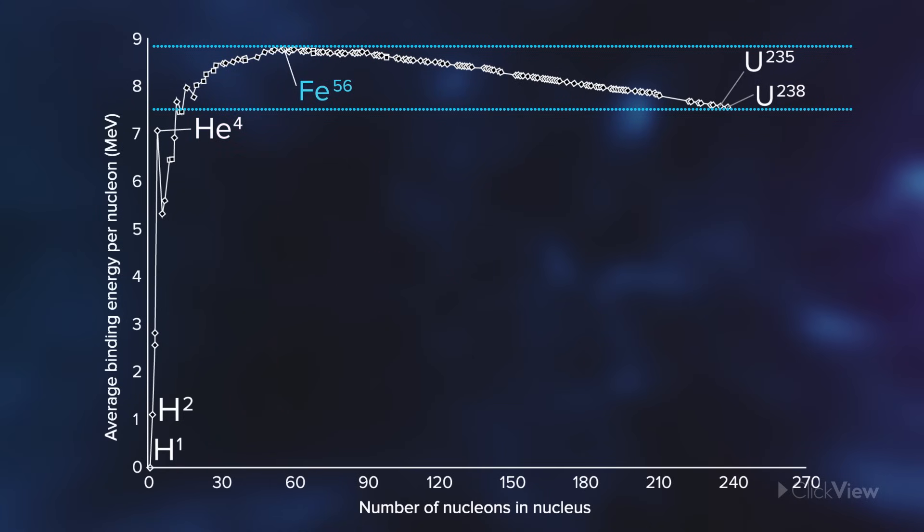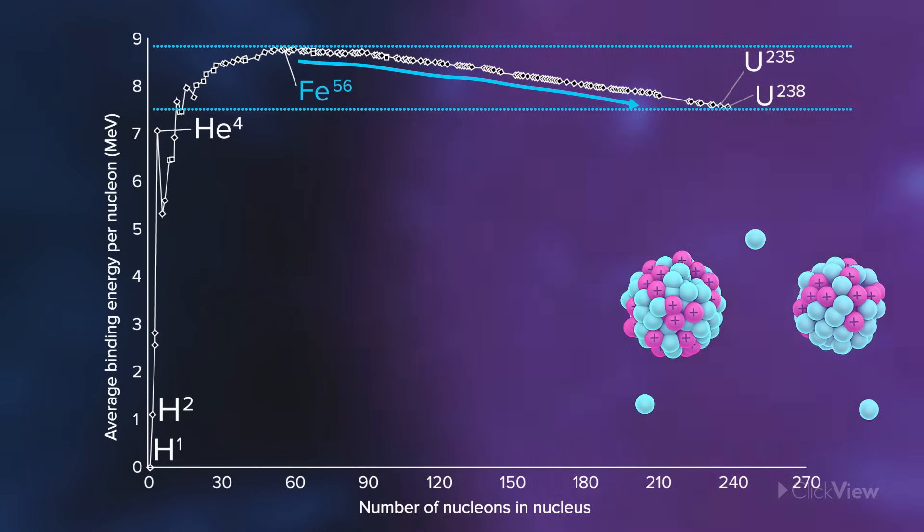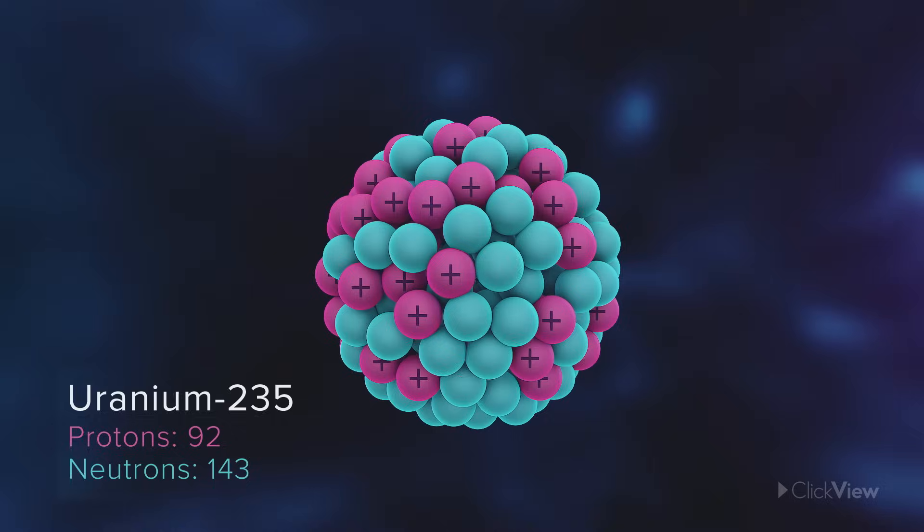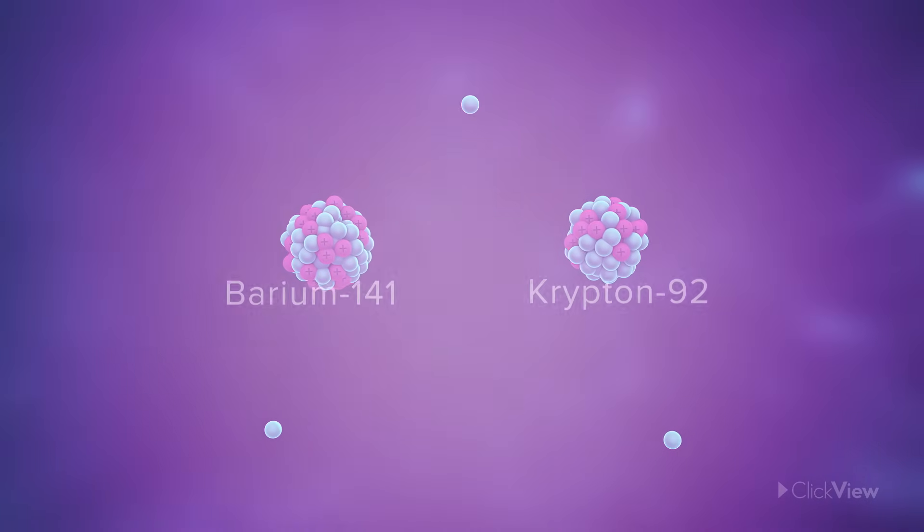Beyond iron, atoms get so heavy they release energy not as they grow, but as they break apart. When uranium undergoes fission to turn into an element like barium, it releases a tiny bit of energy.